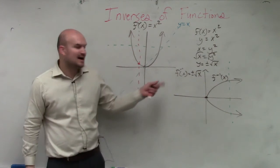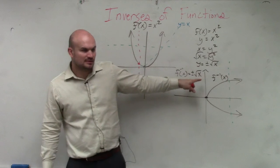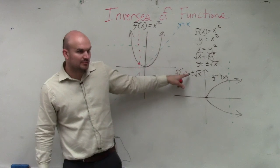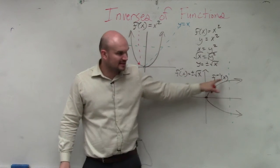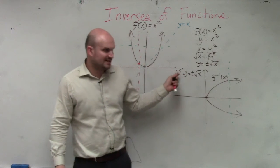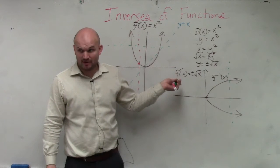So what we found out is that's what the graph would look like. Plus or minus the square root of x looks like that — that's the inverse. That's not a function, though, correct?